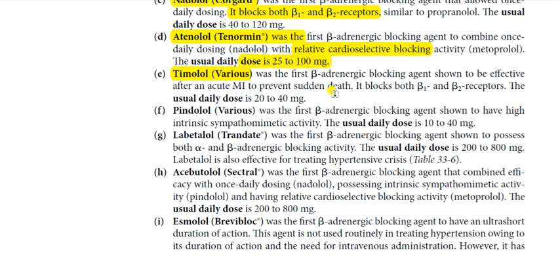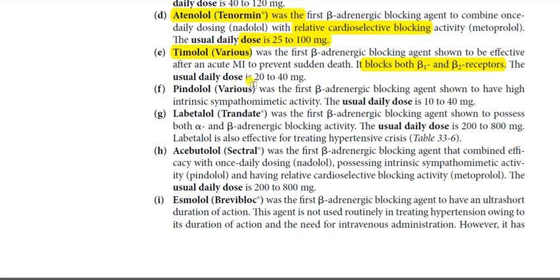Timolol was the first beta blocker shown to be effective after an acute myocardial infarction to prevent sudden death. It blocks both beta-1 and beta-2 receptors. The usual daily dose is 20 to 40 mg. Pindolol was the first beta blocker shown to have high intrinsic sympathomimetic activity — a beneficial property. The usual daily dose is 10 to 40 mg, without notable cardioselectivity.